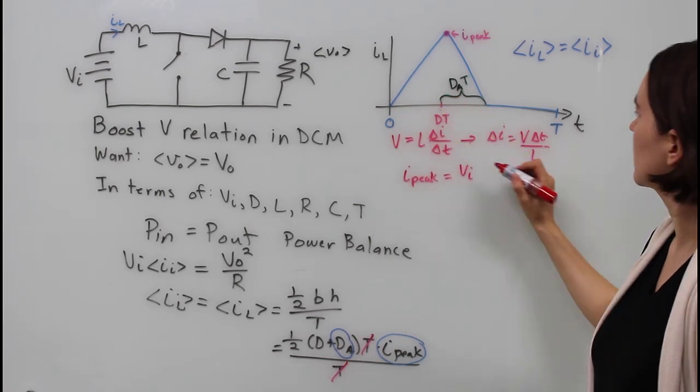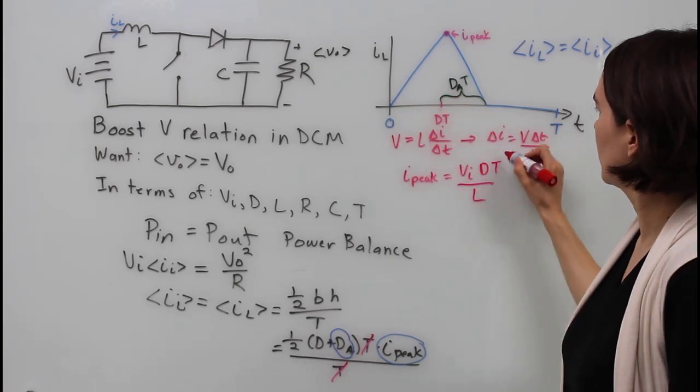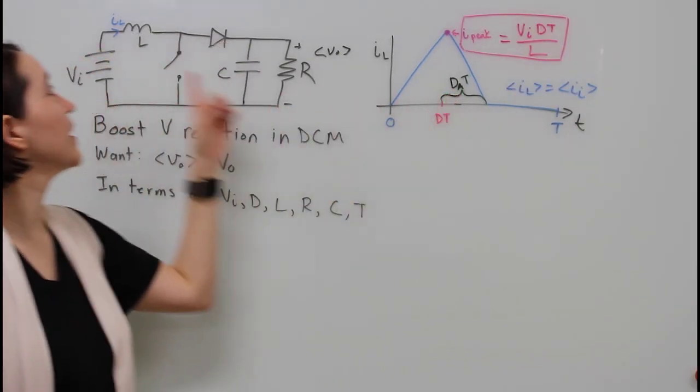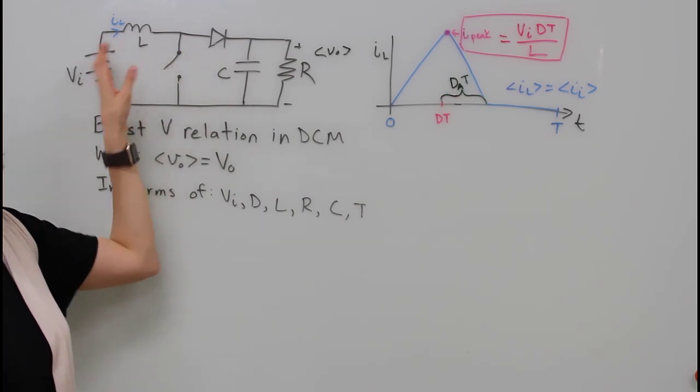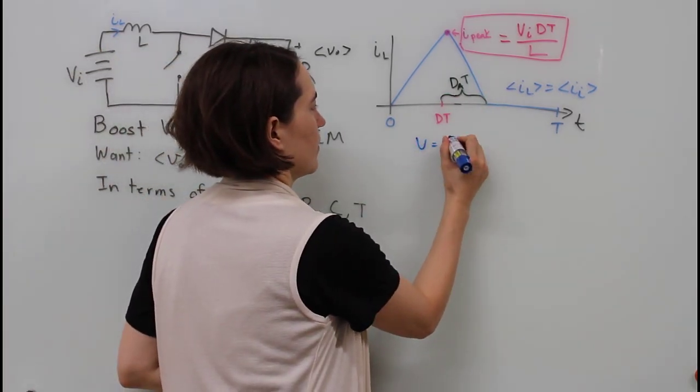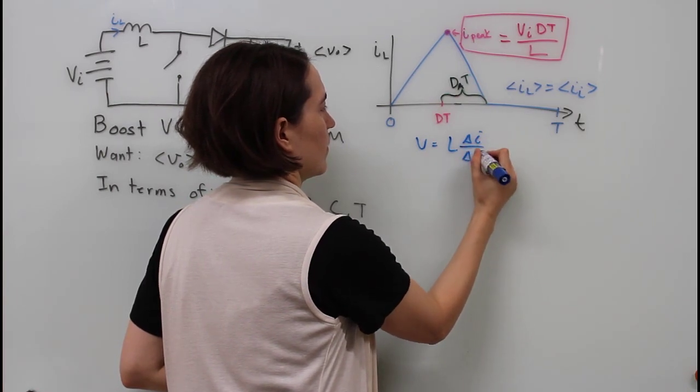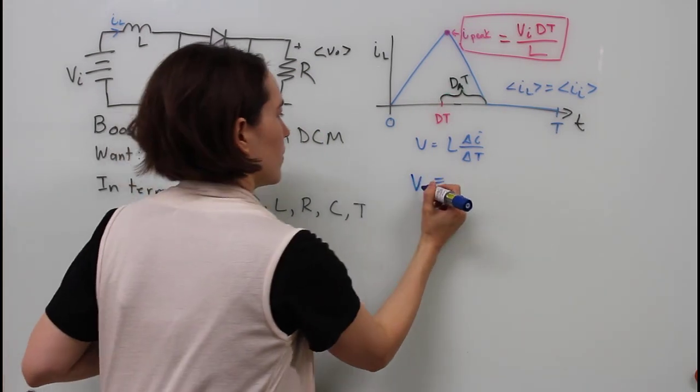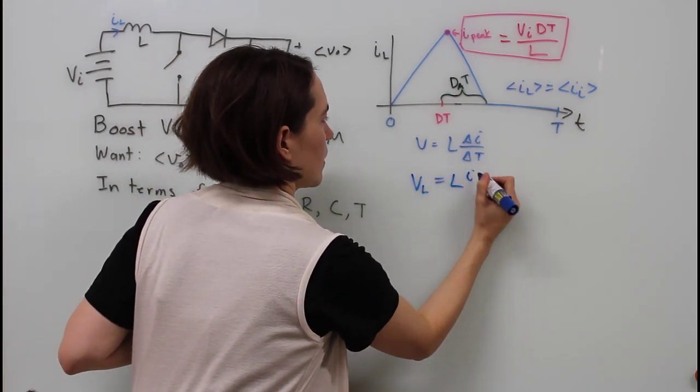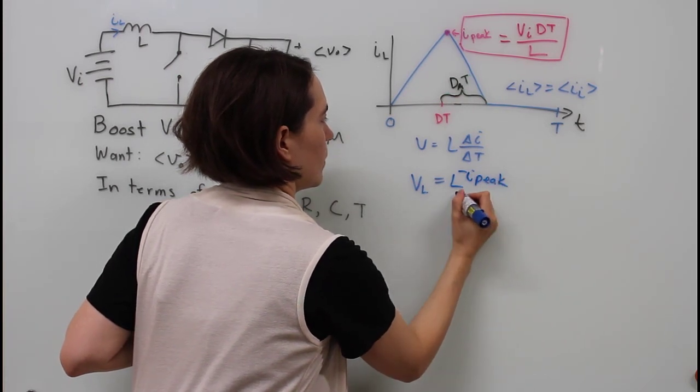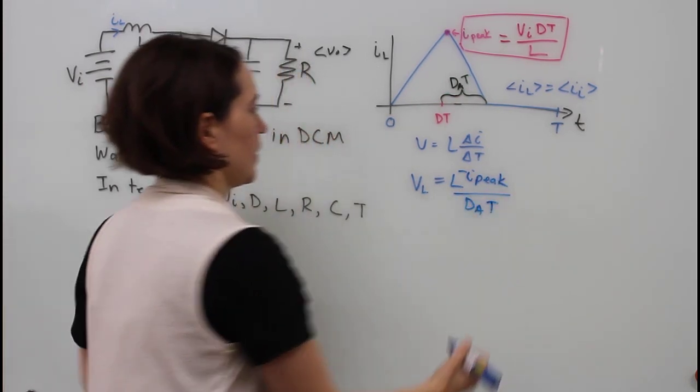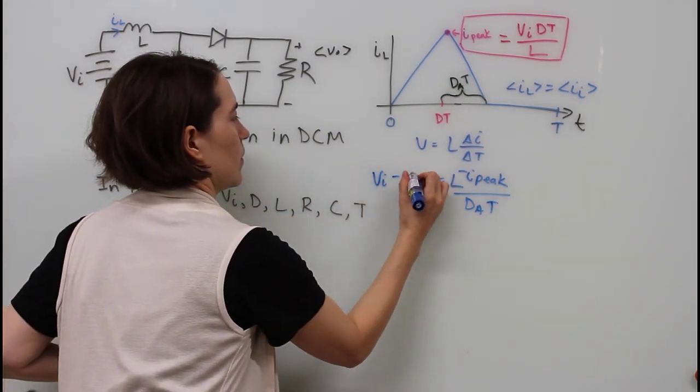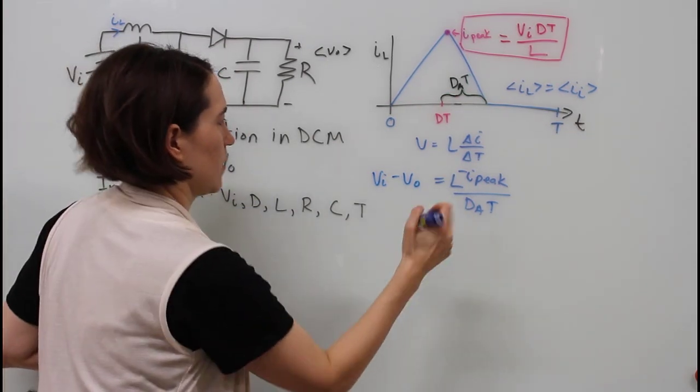Now we need to find the Da, and we can use the same equation, the same inductor equation. So let's write that again. Now we're going from I peak down to zero, so our change in current is actually a negative I peak. This time the delta T is actually going to be Da times T. Another difference is the voltage over the inductor during this phase when the switch is on is actually V in minus V out.